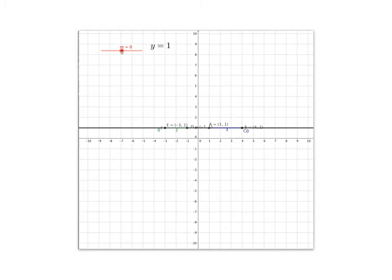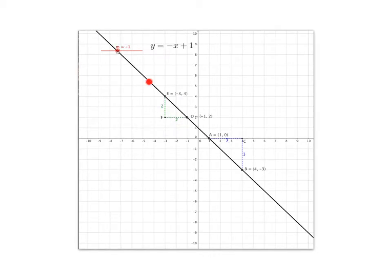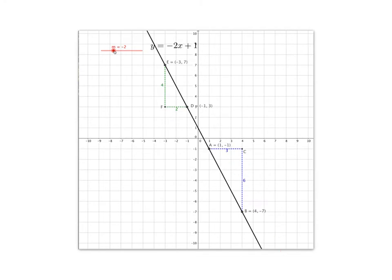I hope that what you also noticed is that when you had a negative value for your gradient it sloped down, and the more negative, the more sharply it sloped down.